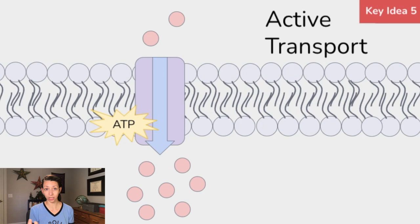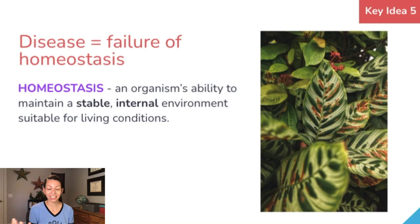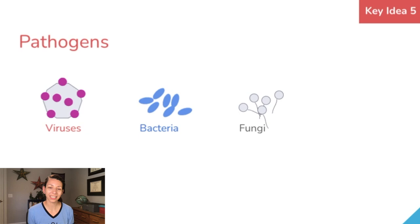Sometimes we encounter disease as a failure of homeostasis. Our bodies and other organisms encounter pathogens all the time. Pathogens can be things like viruses and fungi, and they're going to infect plants and animals and interfere with normal life function.